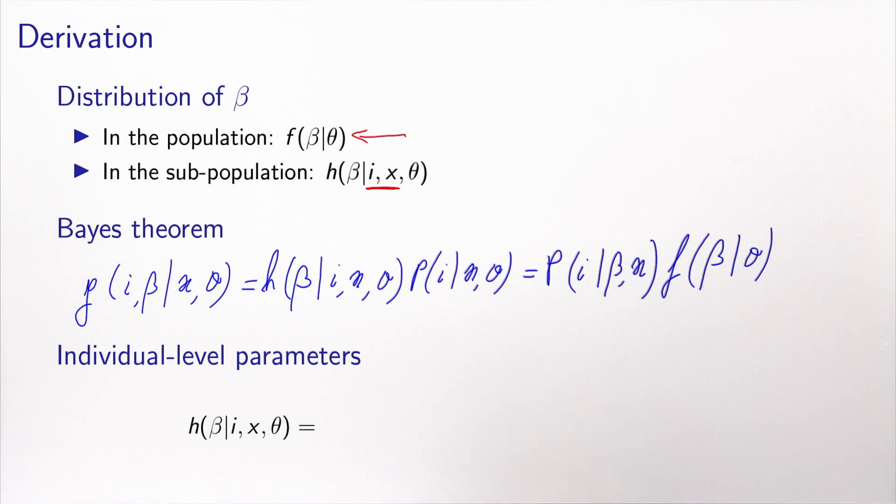So if you look at these quantities, this is the distribution of beta in the subpopulation characterized by i and x. This is the distribution in the full population of beta. This is the choice model, and this is the kernel that gives the choice conditional to beta.